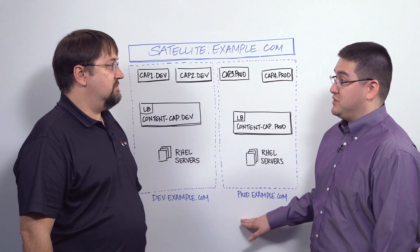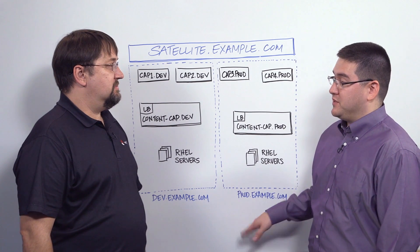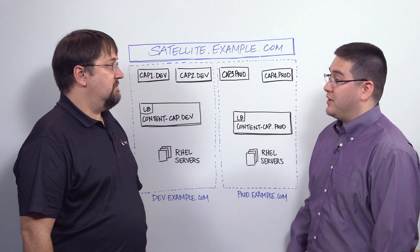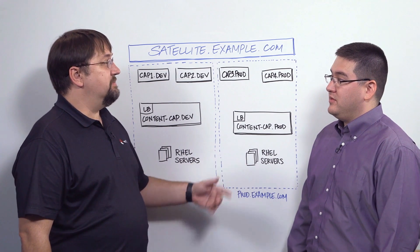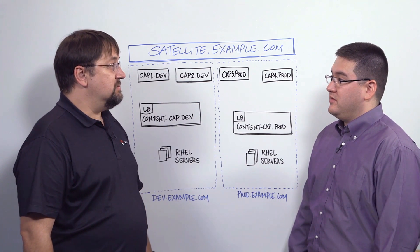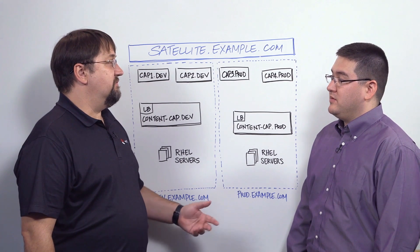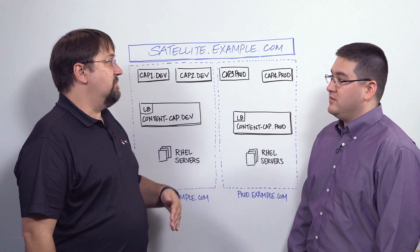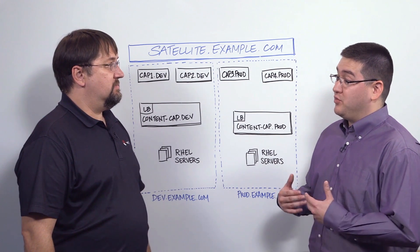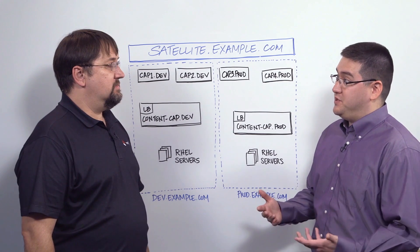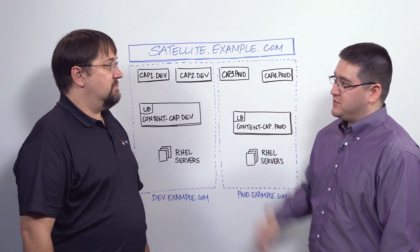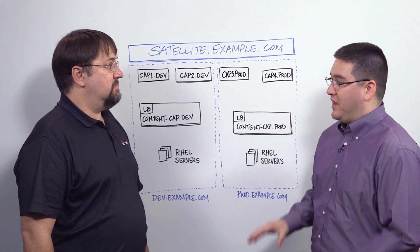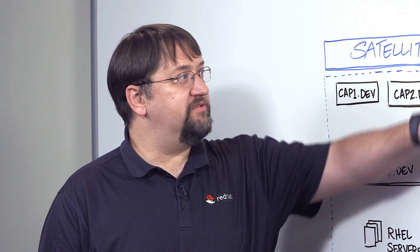Is there anything that we can do to expand this, if a customer has more than maybe two environments? Yes. We can actually add more capsules or load balancers based upon the geo — it could be geolocations or even different network segments. If we're moving into a multi-site, multi-geo space with Satellite 6, do each of those remote sites need to be managed individually? No, they'll all be managed from the satellite head.